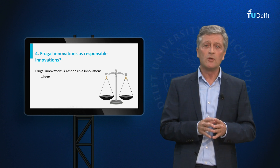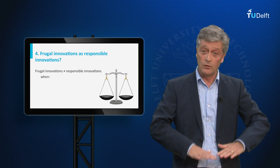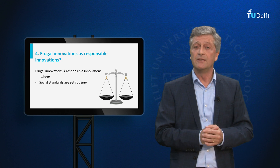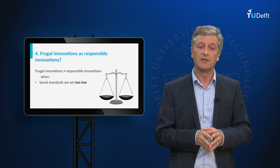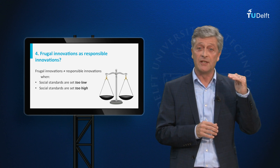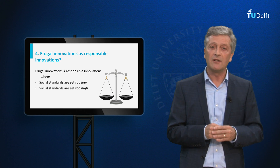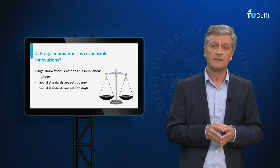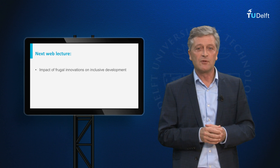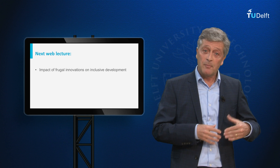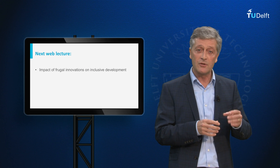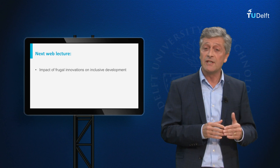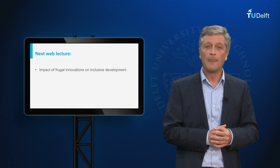To conclude, frugal innovations are not responsible innovations when social standards are set either too low or too high. When the production of frugal innovations uses too low social standards, this can easily lead to exploitation of workers and therefore to irresponsible innovation and production processes. But social standards can also be set too high, where large entrenched firms use unnecessarily high social standards not for ethical reasons, but to protect their markets and block new firms from entering. The next web lecture focuses on the impact of frugal innovations on inclusive development. This session has paved the way by showing how frugal innovations are more likely to contribute to inclusive development when social standards are set as high as possible to ensure decent working conditions and as low as necessary to allow for new innovation opportunities. Thank you for your attention.